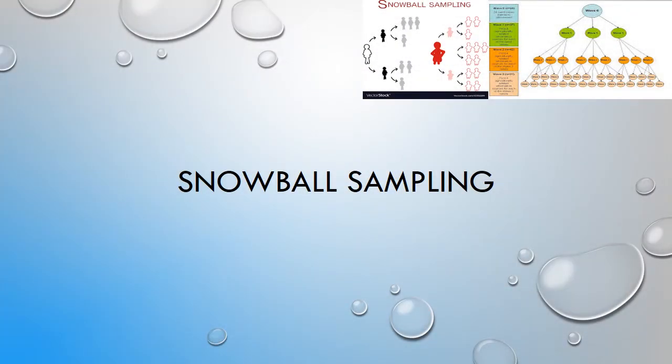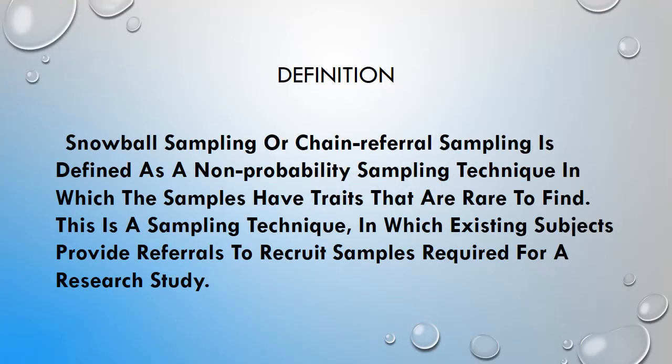Snowball sampling. Definition. Snowball sampling comes under non-probability sampling and is used by researchers to identify potential subjects in studies where the subjects are hard to locate, such as commercial sex workers, drug abuse, etc.